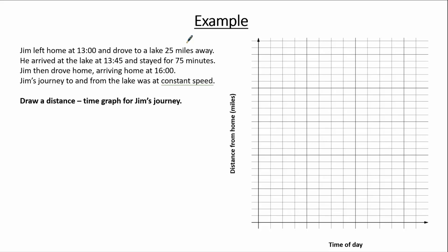We need horizontal and vertical axes: time of day across the horizontal axis and distance from home in miles across the vertical axis. Jim left home at 13:00 and arrived home at 16:00, so we start at 13:00 and finish at 16:00, using one-hour intervals: 13:00, 14:00, 15:00, 16:00. Each hour is split into four parts, so each step is worth 15 minutes. This works well because 13:45 is three steps, and 75 minutes is one hour and 15 minutes — both multiples of 15. Scaling is always very important when completing these questions.